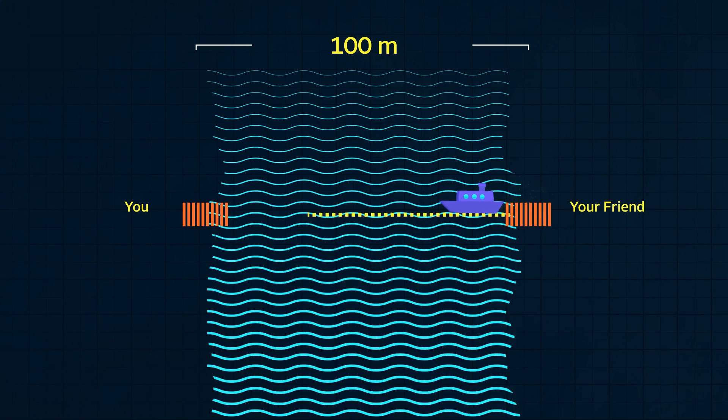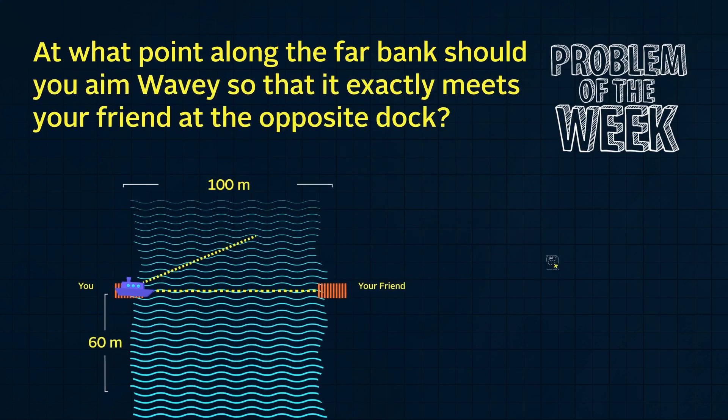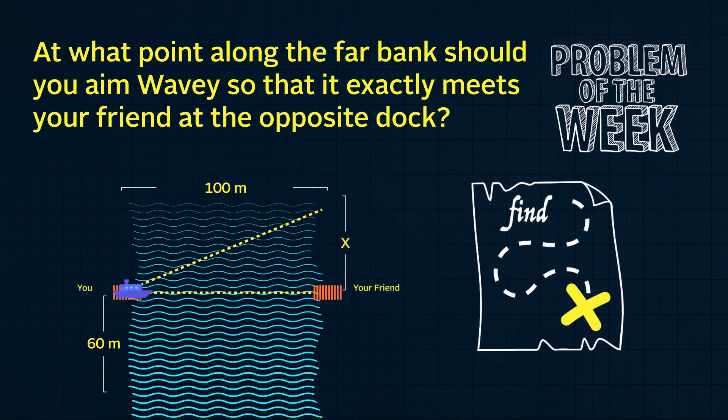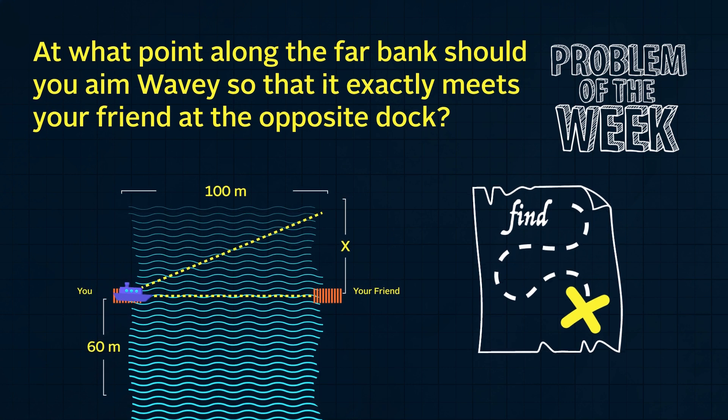Two docks are directly across the river from each other. You are at one, and your friend is at the other with the toy boat. Your friend points wavy directly towards your dock and places it in the river with the motor on, but as it crosses the river, it gets pulled downstream. You retrieve wavy from where it met your bank, 60 meters downstream from your dock, and carry it back to your dock. At what point along the far bank should you aim wavy so that it exactly meets your friend at the opposite dock? Submit your navigational bearing below the video. You can include a picture to help explain your work.